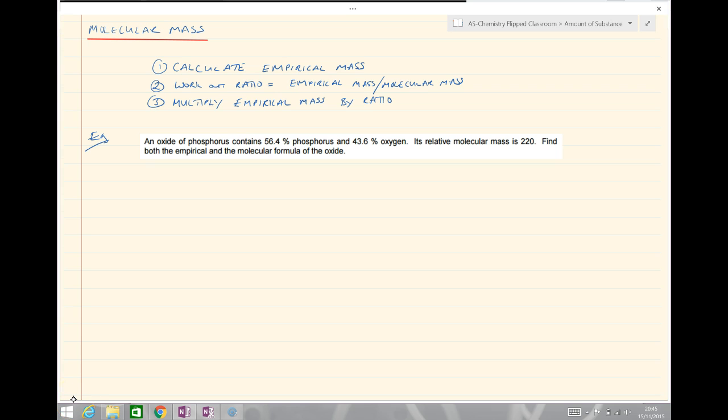In the next step we're going to look and see how we can work out molecular formulas from empirical formulas. We've got our equation or our steps at the top here: three steps. Calculate the empirical mass, work out the ratio of the empirical mass to the molecular mass, and then finally multiply the empirical mass by the ratio to give us a molecular formula.